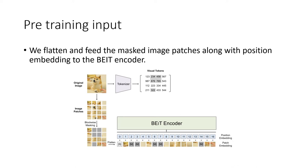We perform blockwise masking using the algorithm outlined previously, then flatten the patch embedding, and add a position embedding to it. This is our input to our BEIT encoder. Just like in the vision transformer, we add an extra patch plus position embedding at position 0, as outlined in the figure.